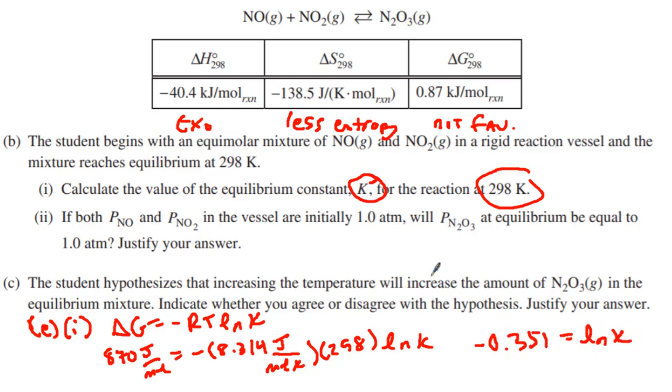Keep in mind, back to our math class, the algebra of natural log is e to the power. So we're going to do e to that answer, and I end up getting a K value of 0.70. That is worth one point. I know it's a lot of work for one point, but that K is worth one point.